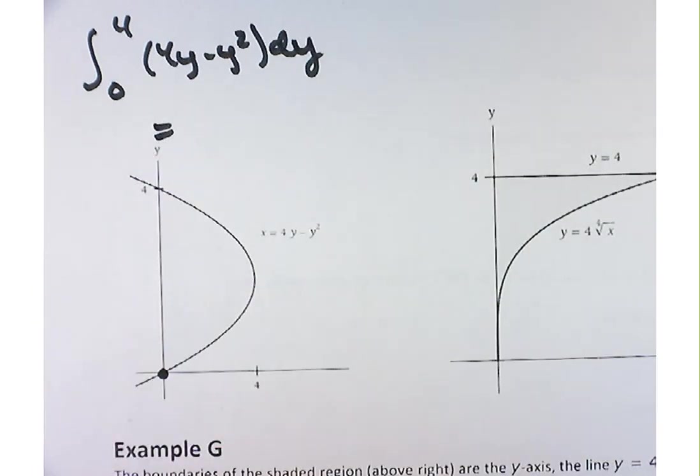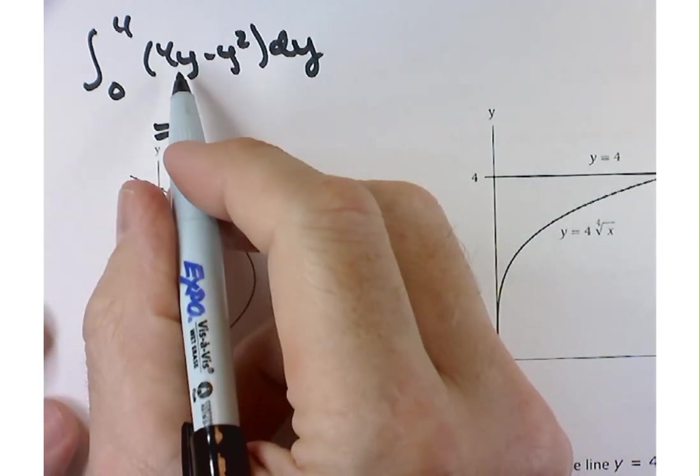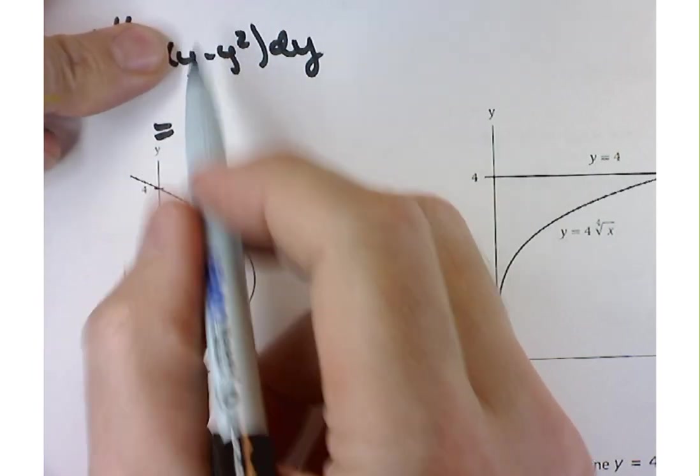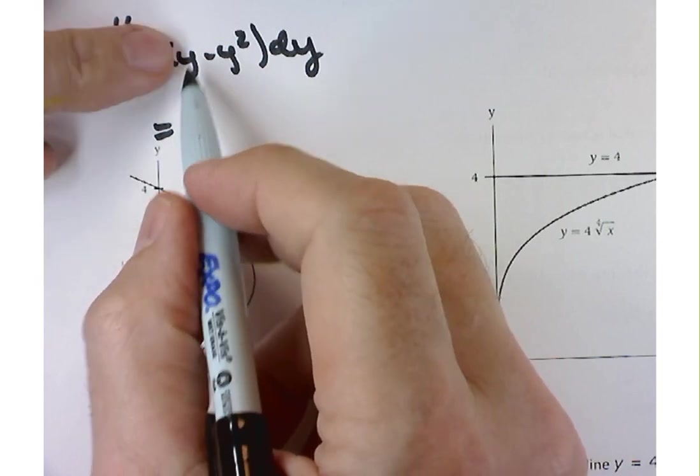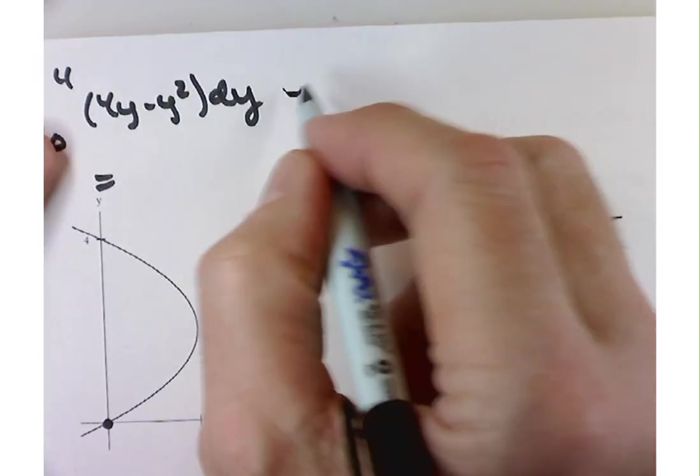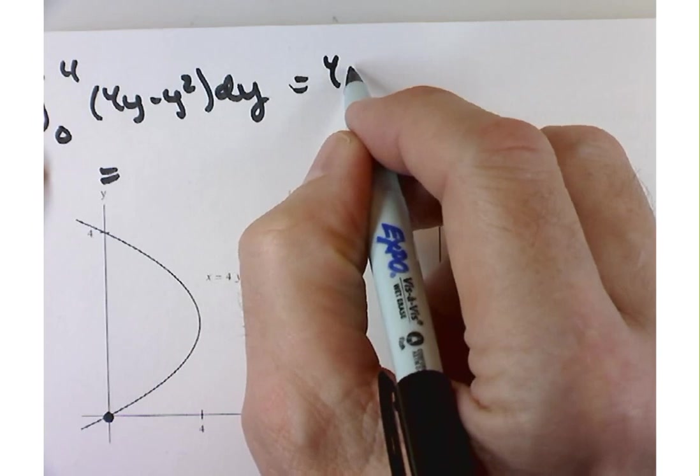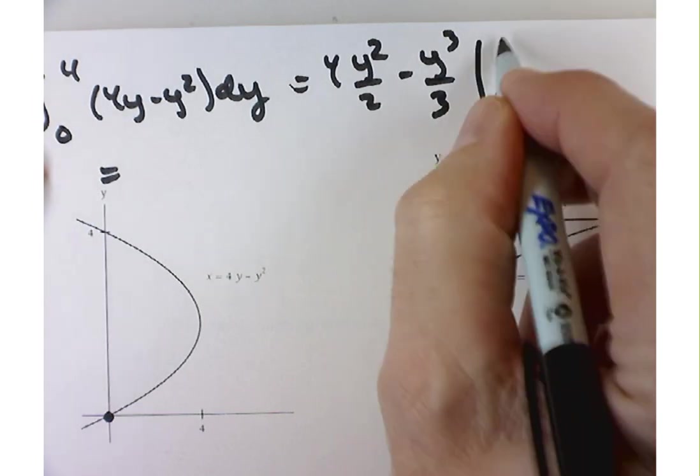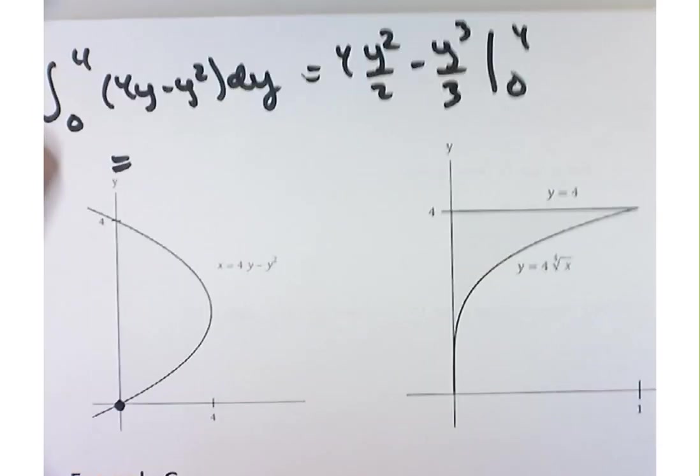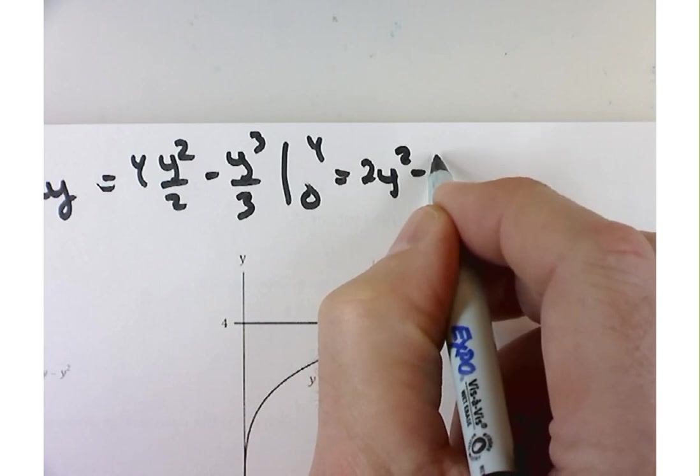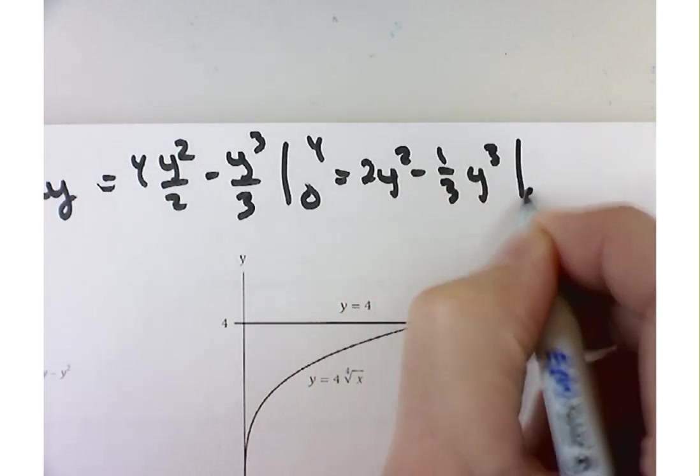So this is going back to the fundamental theorem of calculus part 2. I need to find an antiderivative here with respect to y, add one to that exponent, it's going to be a 2, divide by that same exponent, I'll end up with y squared over 2. I'm not going to try and do it all out in one step here. Let me give you something you can kind of follow along with 4 times y squared over 2 minus y cubed over 3 between 0 and 4. You can simplify those. That's 2y squared minus 1 third y cubed between 0 and 4.